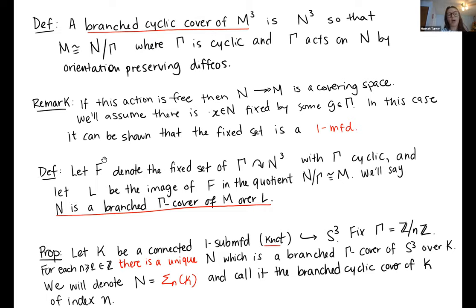How are they defined? I have this downstairs manifold M, and an upstairs manifold N, and an action upstairs by a cyclic group that acts super nicely. It's acting by orientation preserving diffeomorphisms. I can take the quotient of this manifold by this action. In the case that I get M, then I'll say that N is the branched cyclic, is a branched cyclic cover of M.